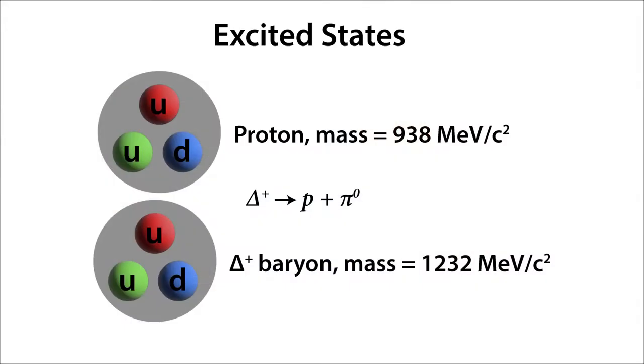However, the model was fantastic at explaining the particle zoo because what it now said, because you have bound states, if you excited the bound state, just like you can excite an electron in an atom, you get another particle. The reason we think of it as another particle is because the binding energy of these quarks was a lot greater than the binding energy between an electron and a proton. So if you excited the quark-anti-quark pair in a meson, the mass of the meson would increase by an appreciable amount, and we observed it as a completely different particle with a different mass.